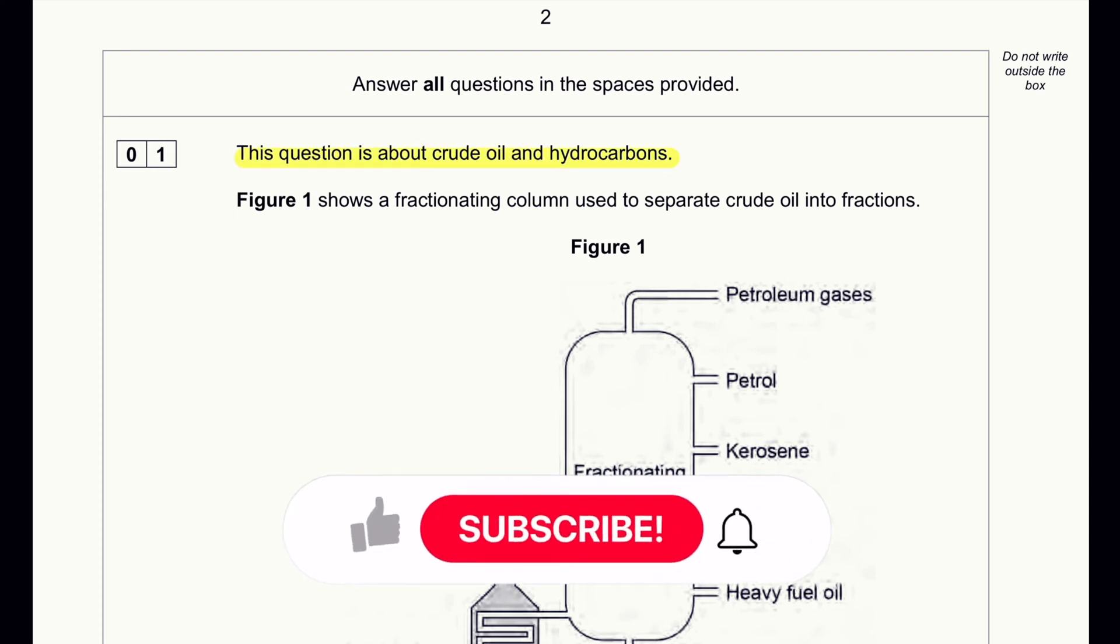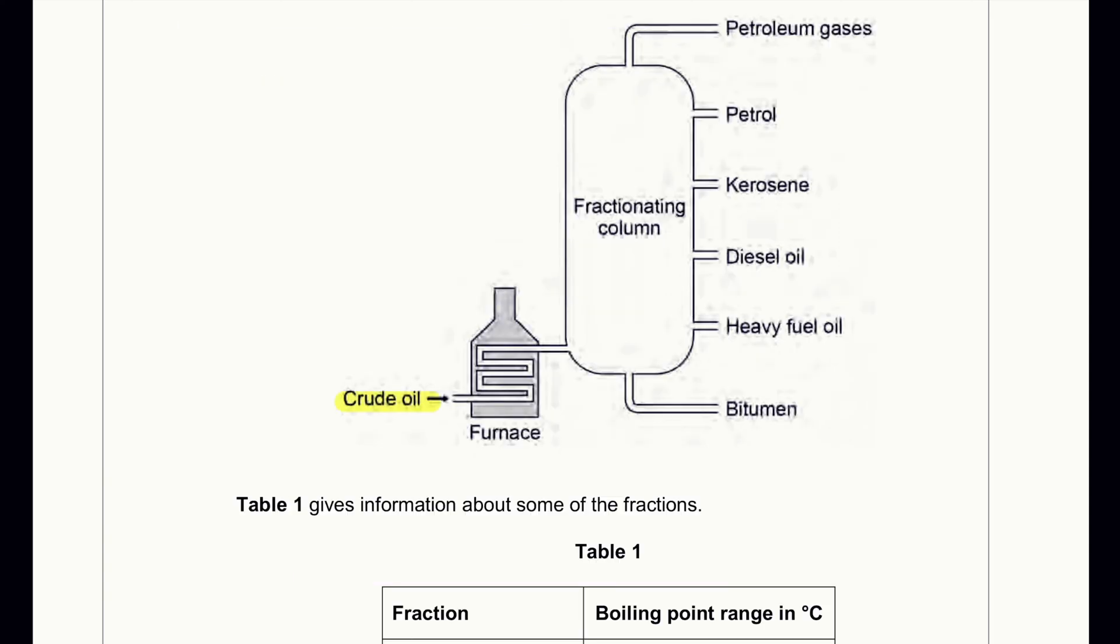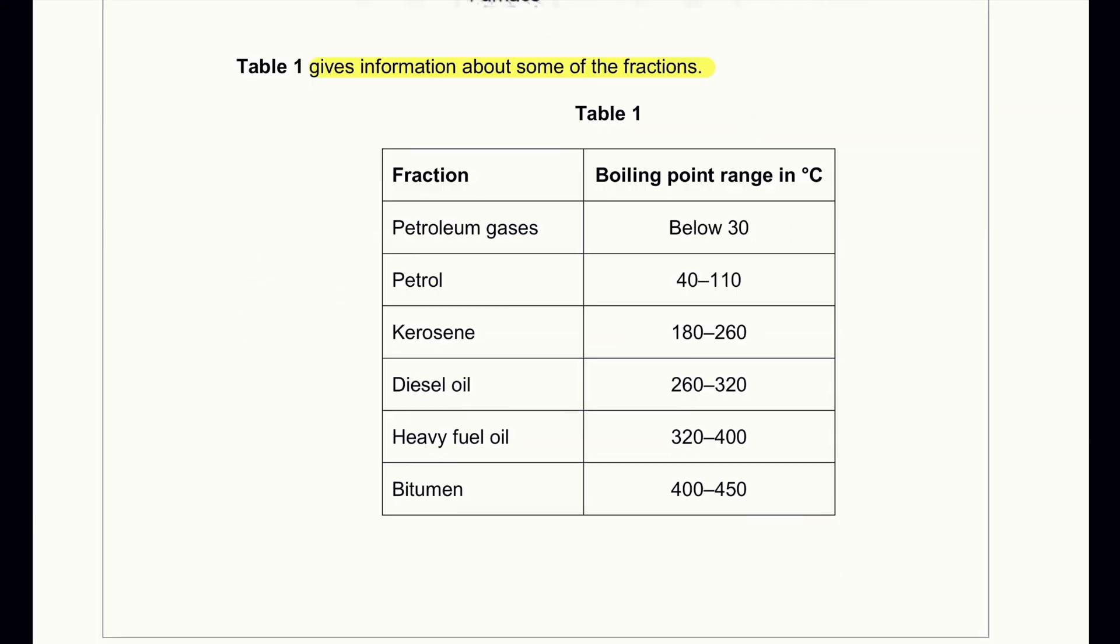This question is about crude oil and hydrocarbons. Figure 1 shows a fractionating column used to separate crude oils into fractions. So we have crude oil here which is going to get divided into fractions like heavy oil, diesel oil, kerosene, petrol and petroleum gases and bitumen. Table 1 gives information about some of the fractions. We can see between what carbon to what carbon range we get in each type of fuel.